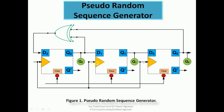Here you can see the design of a pseudo-random sequence generator which comprises three D flip-flops: D2, D1, and D0. The output Q2 is connected to input D1, output Q1 is connected to input D0. There is an exclusive-OR gate with two inputs — one connected to Q0 and another connected to Q2 — and the XOR output is connected to the input D2 of the first flip-flop.